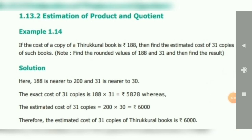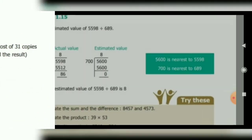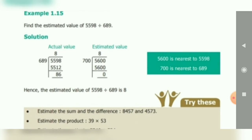188 is rounded to 200, and 31 is nearest to 30. So 200 multiplied by 30 equals 6000. The actual value 5828 is approximately equal to 6000. Therefore, the estimated cost of 31 copies of Tirukural is Rupees 6000.